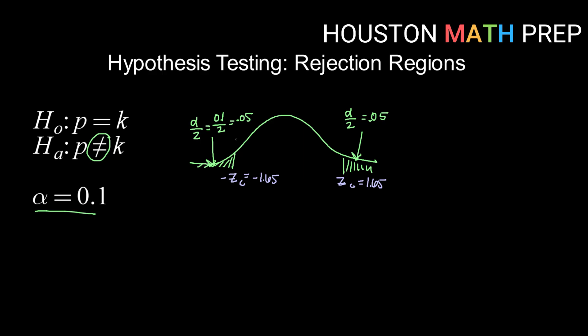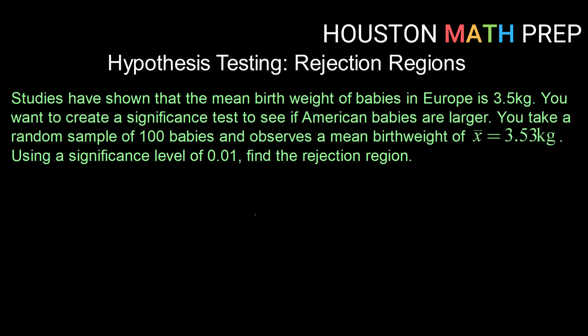Now let's look at this with a more concrete example. Studies have shown that the mean birth weight for babies in Europe is 3.5 kilograms. You want to create a significance test, which is the same as a hypothesis test by the way, to see if American babies are larger. You take a random sample of 100 babies and observe a mean birth weight, x-bar, of 3.53 kilograms. Using a level of significance of 0.01, find the rejection region. In order to have a rejection region we first need to have a set of hypothesis statements.